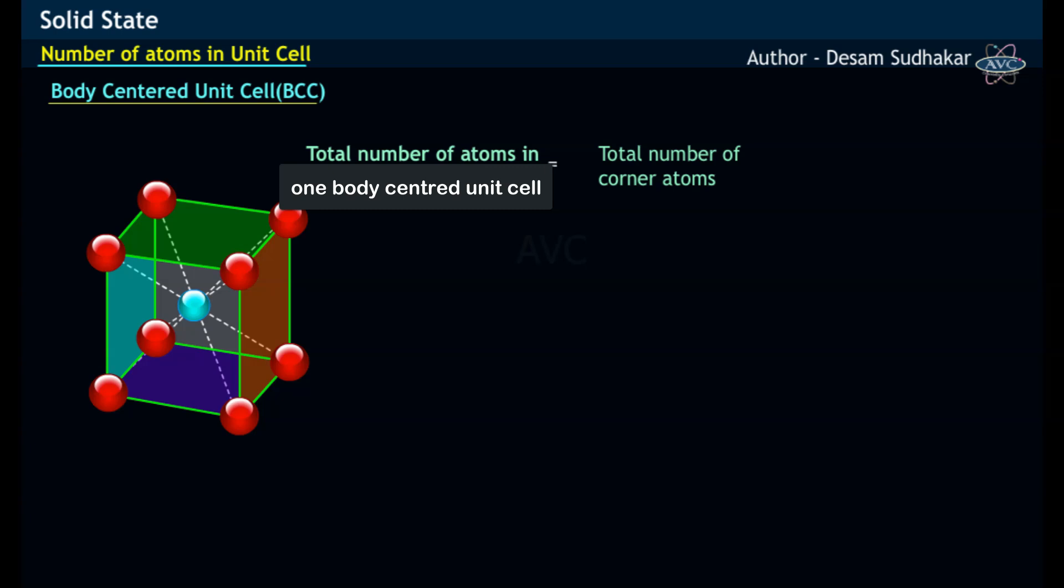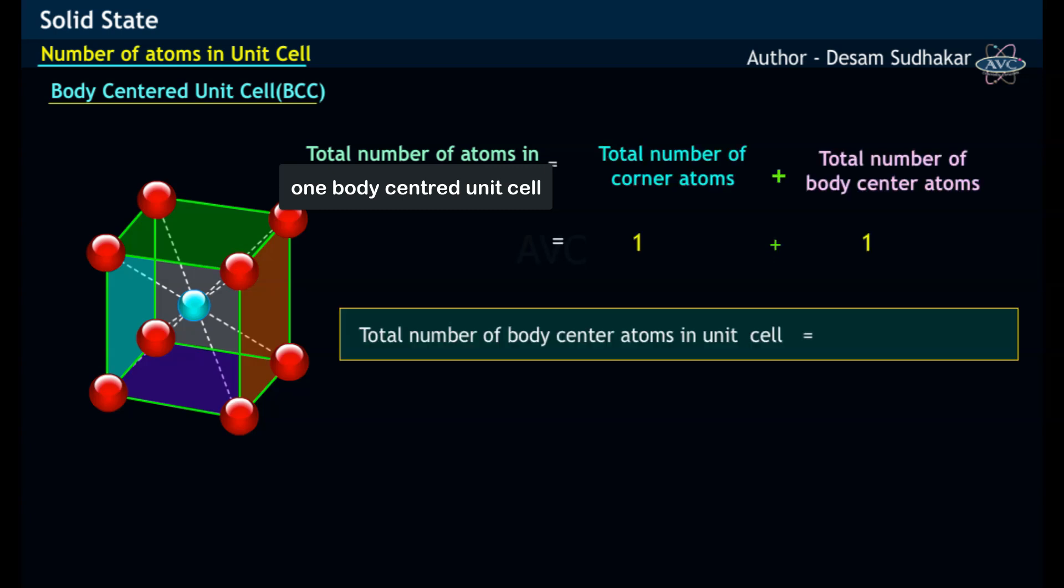Thus, the body-centered cubic unit cell contains one plus one, that is two atoms per unit cell.